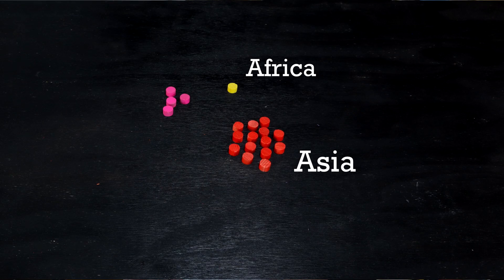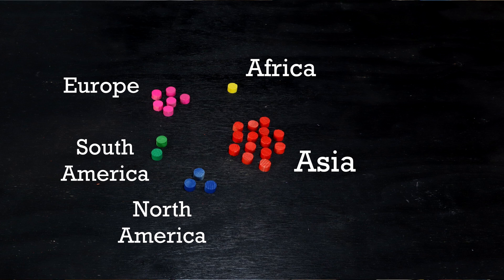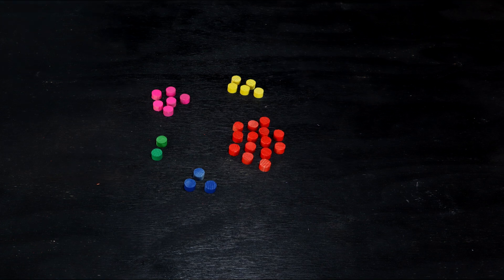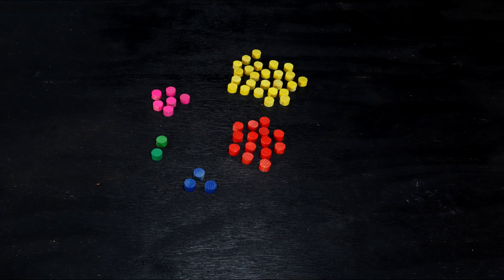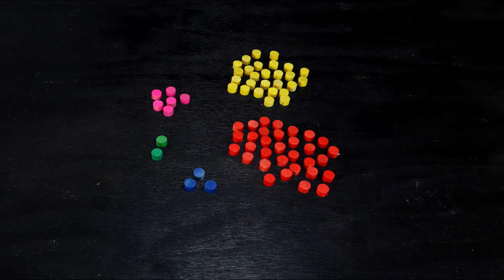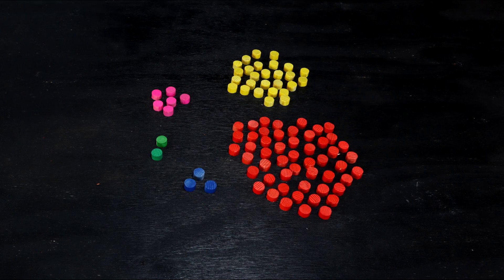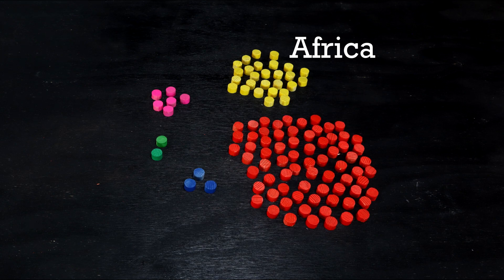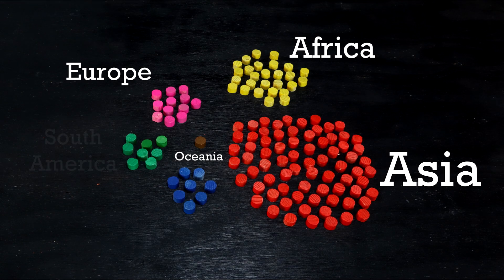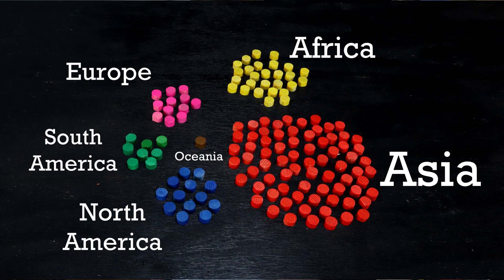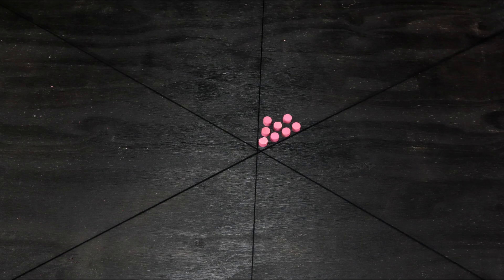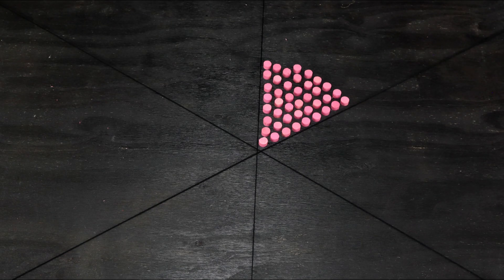This is the geographical distribution of people older than 75 in the world today. And this is the distribution in the year 2100 of the world.